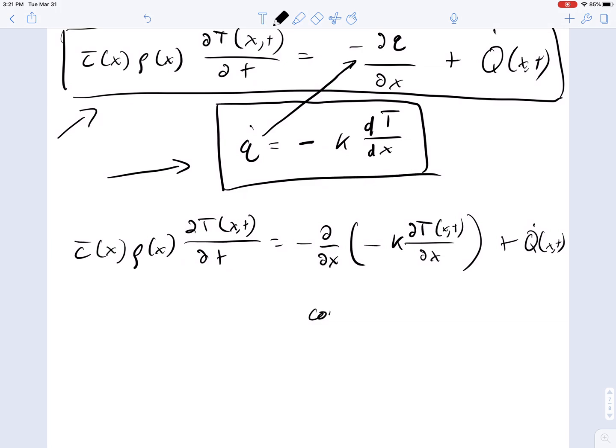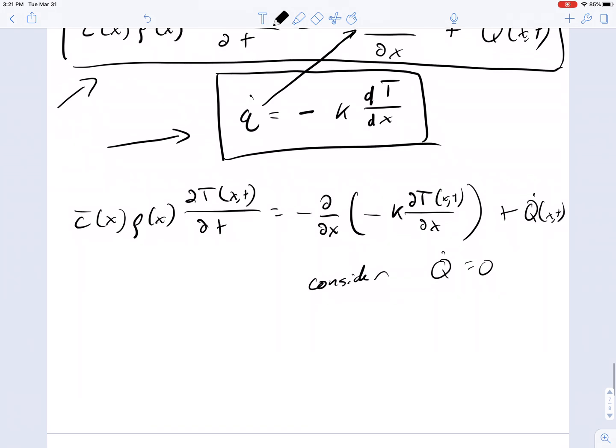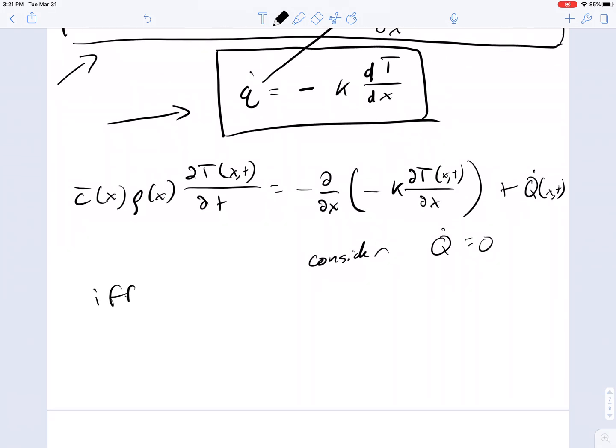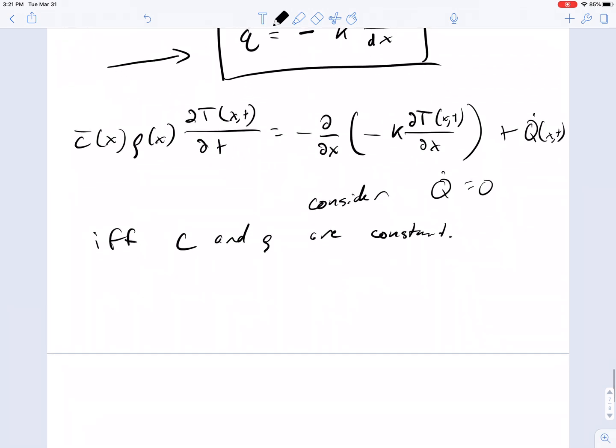Let's consider just the case with q dot equal to zero, just for this next step. And if and only if C and rho are constant, we can do one more simplification.